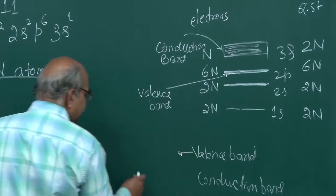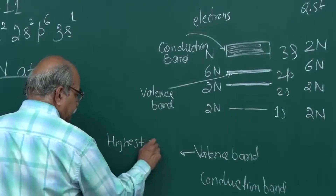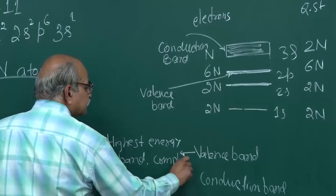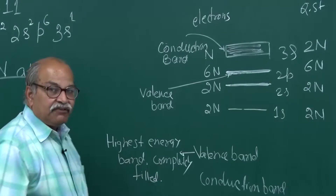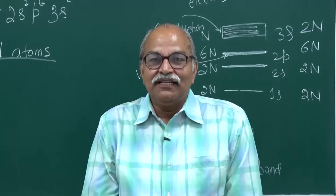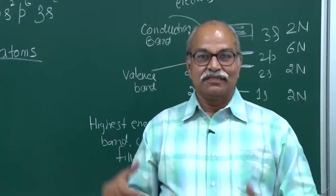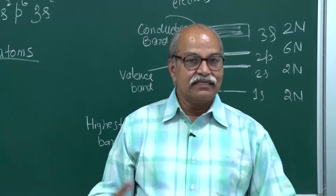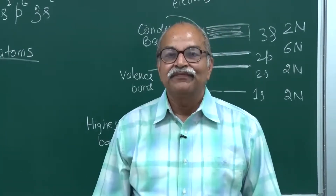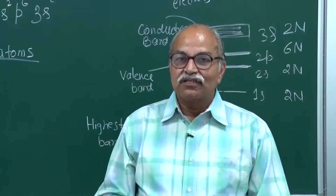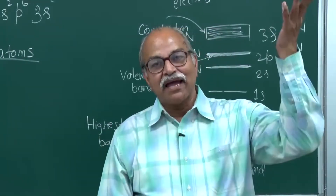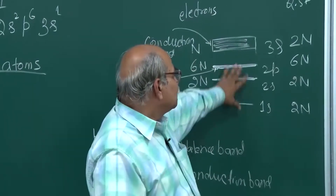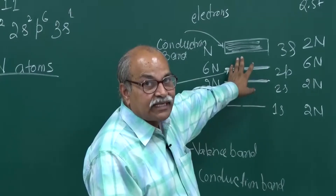The valence band is defined as the highest energy band which is completely filled. When I say completely filled, I am not taking care of any thermal interactions — I am treating this whole solid to be at a very low temperature, close to 0 K. At low temperatures, thermal interactions between the lattice and electrons are not taken into account.